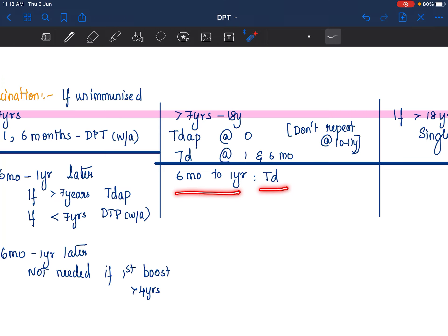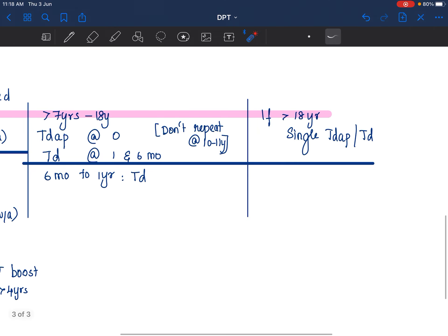At 6 months to 1 year, you will give a TD dose. If the child is more than 18 years, no longer a child, adult, then you will just give a single Tdap or TD dose depending upon whichever is available.